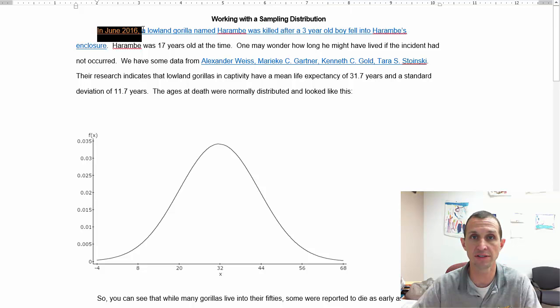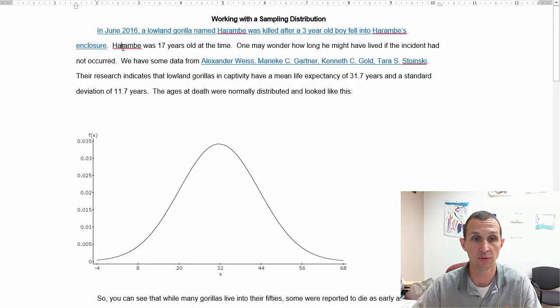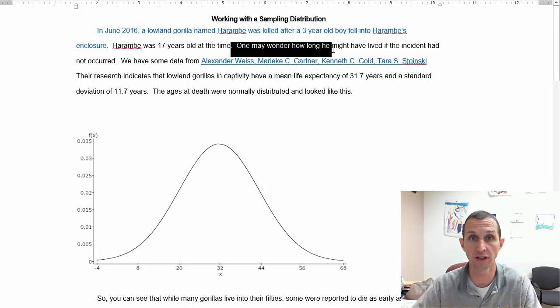So unfortunately in June 2016 when I'm recording this video a lowland gorilla named Harambe was killed after a three-year-old boy fell into Harambe's enclosure. It went pretty viral, a lot of people had a lot of things to say about it, but Harambe was 17 years old at the time and so one may wonder how long he might have lived if the incident had not occurred.